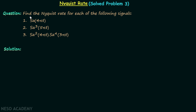In this question we need to find the Nyquist rate for each of the following signals. There are three signals: the first signal is sinc(4πt), the second signal is sinc(5πt) whole cube, and the third signal is sinc(4πt) whole square multiplied by sinc(3πt) to the power 4.